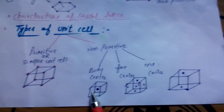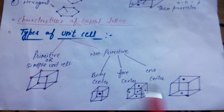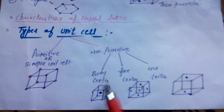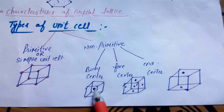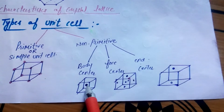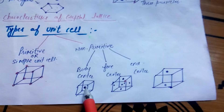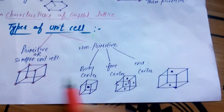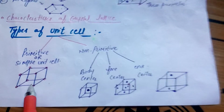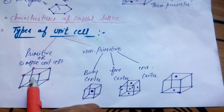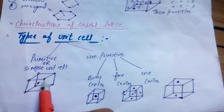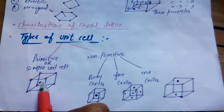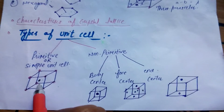This is the simple unit cell. The non-primitive unit cell includes body center, face center, and end center. As the name indicates, body center means an atom molecule is present at the center of the body, in addition to atoms at each corner. This is the body center unit cell.